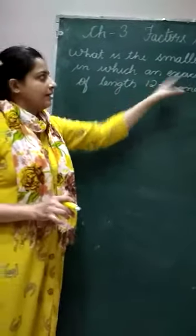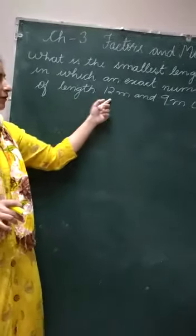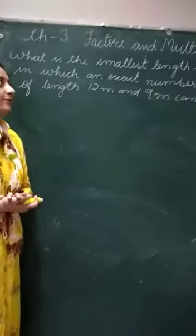What is the smallest length of a room in which an exact number of tables of length 12 meter and 9 meter can fit?